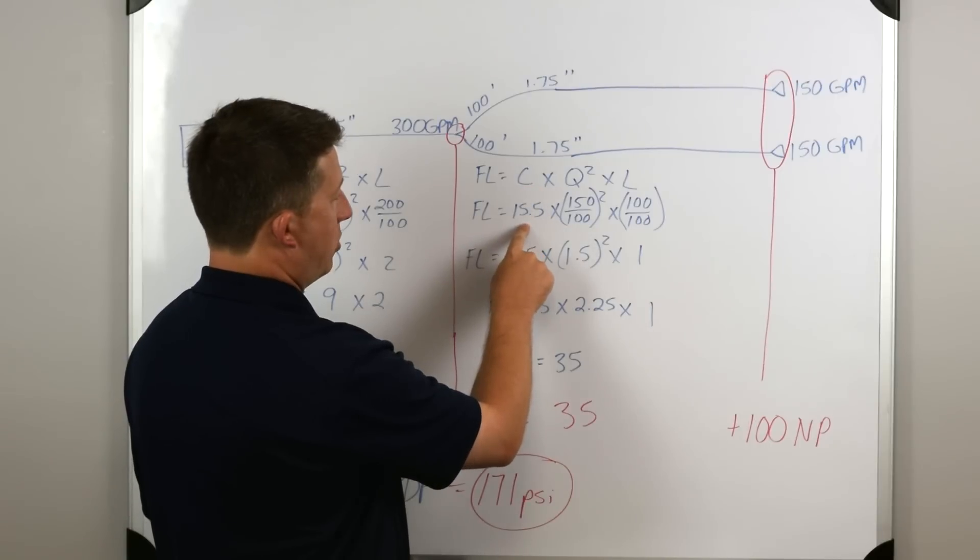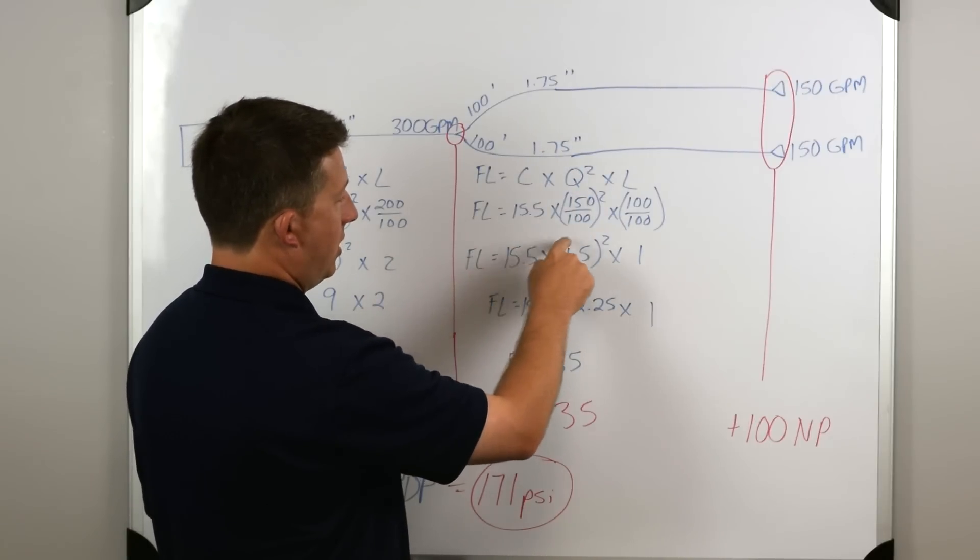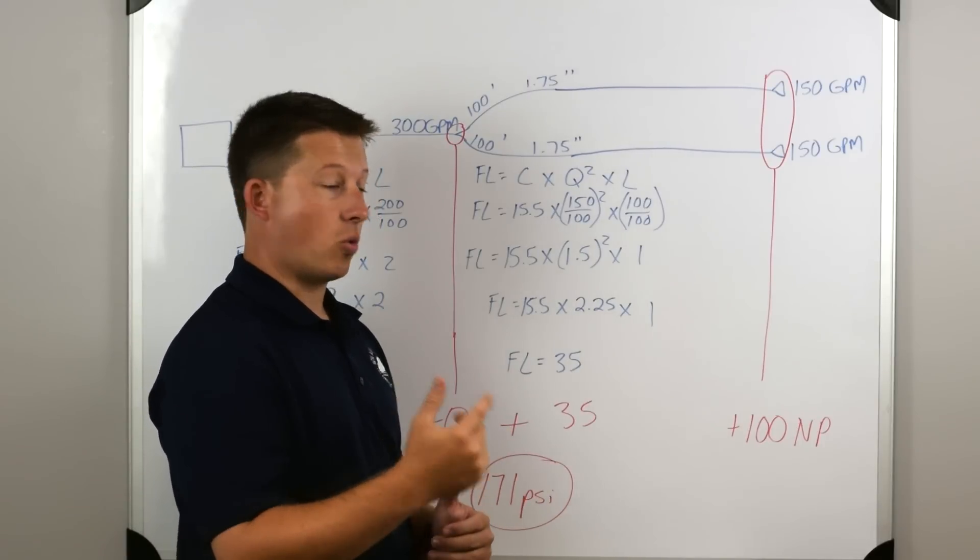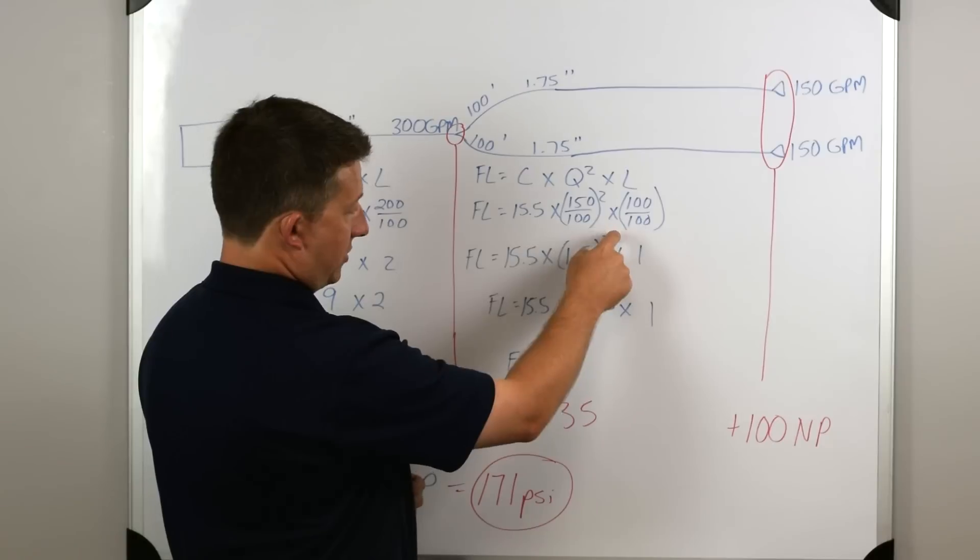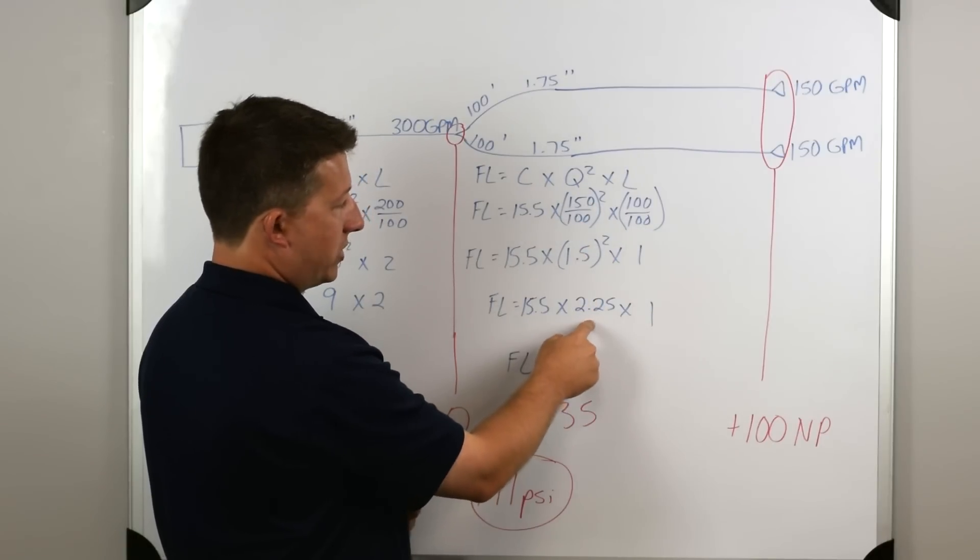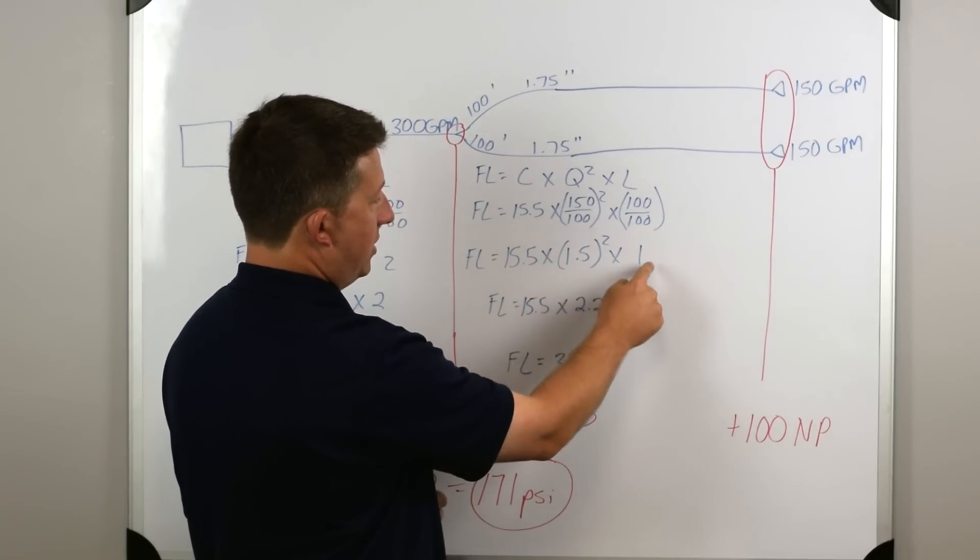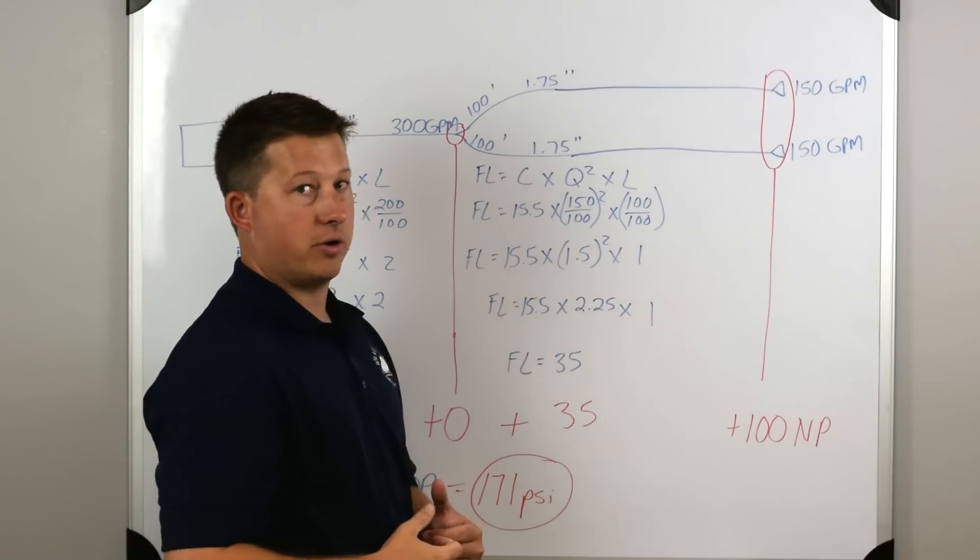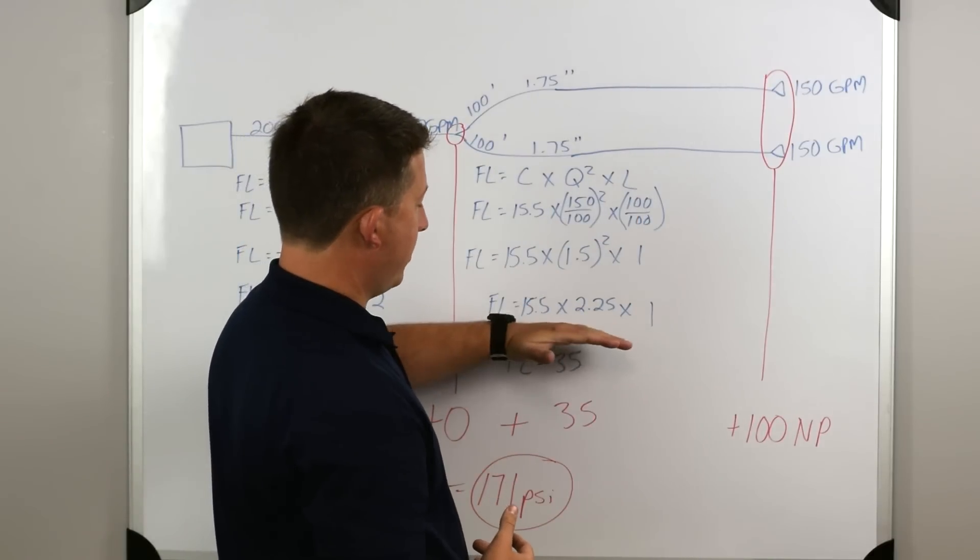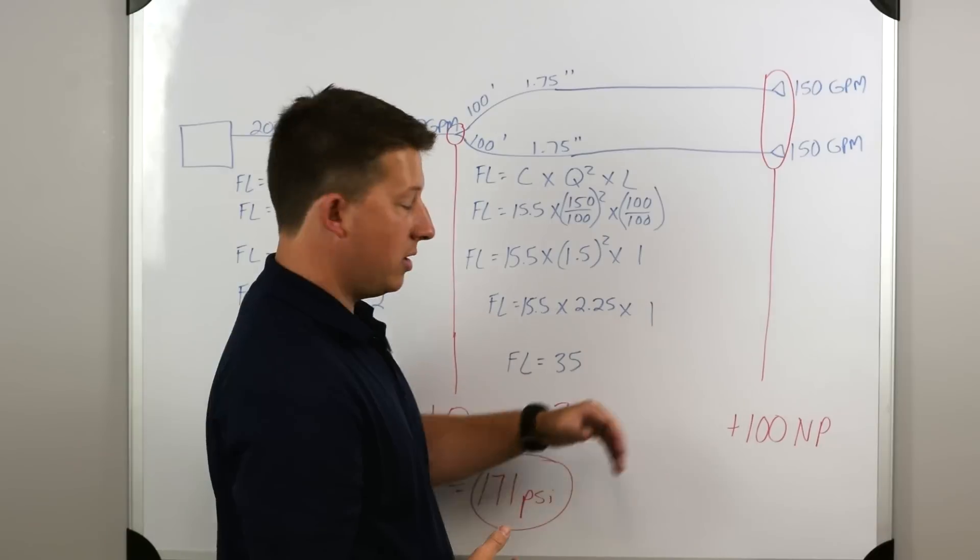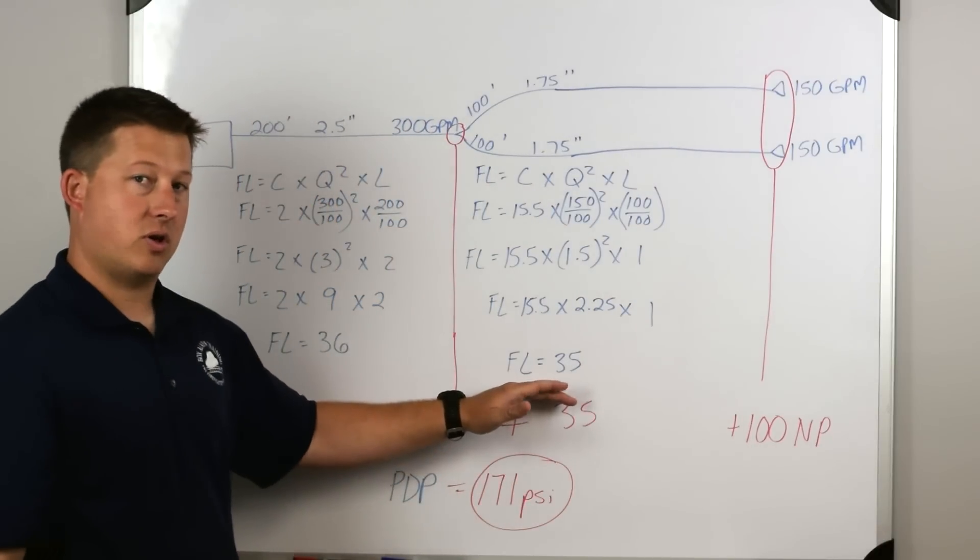So in this case, we only have to work one side, which is 100 feet of inch and three-quarter flowing 150 gallons per minute. Coefficient is 15.5 for that inch and three-quarter hose. It's 150 GPM, so that's 150 divided by 100 squared. So 1.5 squared, when we simplify, goes to 2.25. And then 100 feet of hose in hundreds of feet is only one. 100 divided by 100 is one.